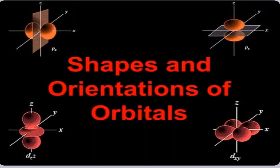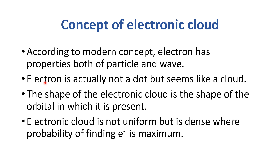Let's see the shapes and orientations of orbitals. We always denote an electron with a dot, but we know that there is an electronic cloud. According to the modern concept, an electron has properties of both a particle and a wave. An electron is actually not a dot — it seems like a cloud.